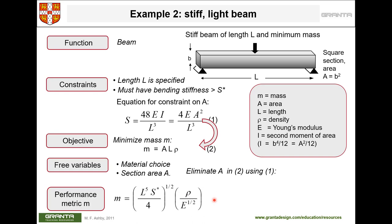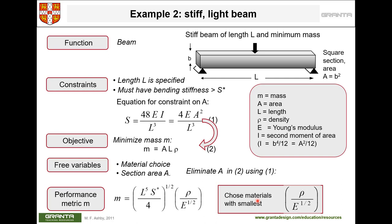Minimizing mass for the beam means minimizing ρ/E^(1/2) — or maximizing E^(1/2)/ρ. Unlike the tie rod, we don't deal with yield strength here; the relevant property is elastic modulus E. The relationship is also not linear — it involves ρ/E to the power of one-half.